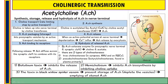Cholinergic transmission is the process of synaptic transmission which uses acetylcholine as the transmitter. We are going to study the synthesis, storage, release, and hydrolysis of acetylcholine in a cholinergic nerve ending with the help of a diagram. There are six steps involved. The first step is choline transport, which is considered the rate-limiting step and occurs by active transport.